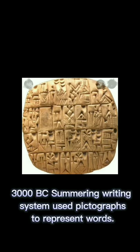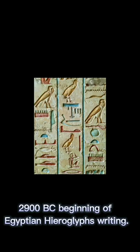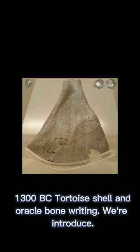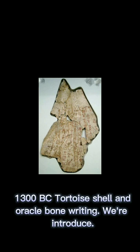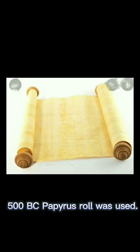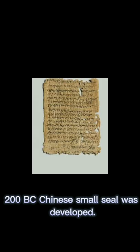In the year 3000 BC, a writing system used pictographics to represent words. In 2900 BC, Egyptian hieroglyphics began. In the year 1300 BC, turtle shells and oracle bone writing were introduced. In 500 BC, papyrus was used. In 200 BC, a Chinese writing system was developed.